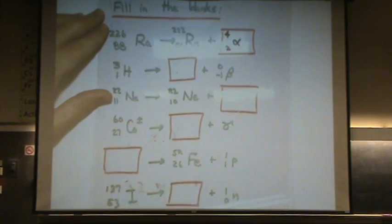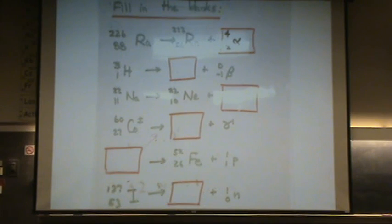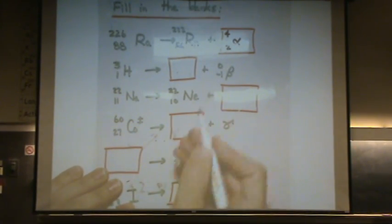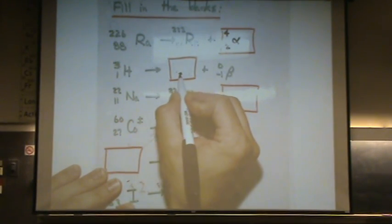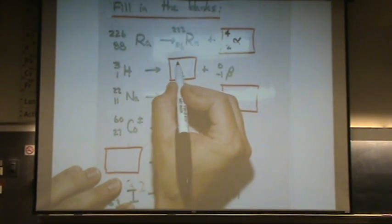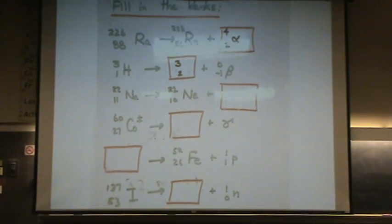Let's try the next one. This is tritium, an isotope of hydrogen. So 1 plus something is -1. That would be a 2. So 2 minus 1 is 1. And then 3 plus 0 is 3. What is that?